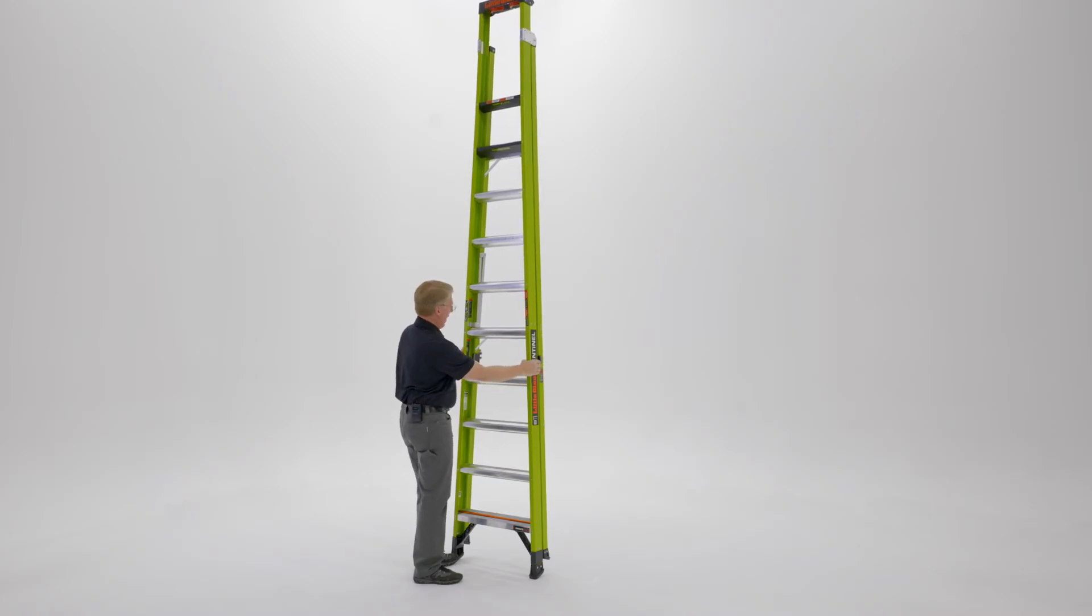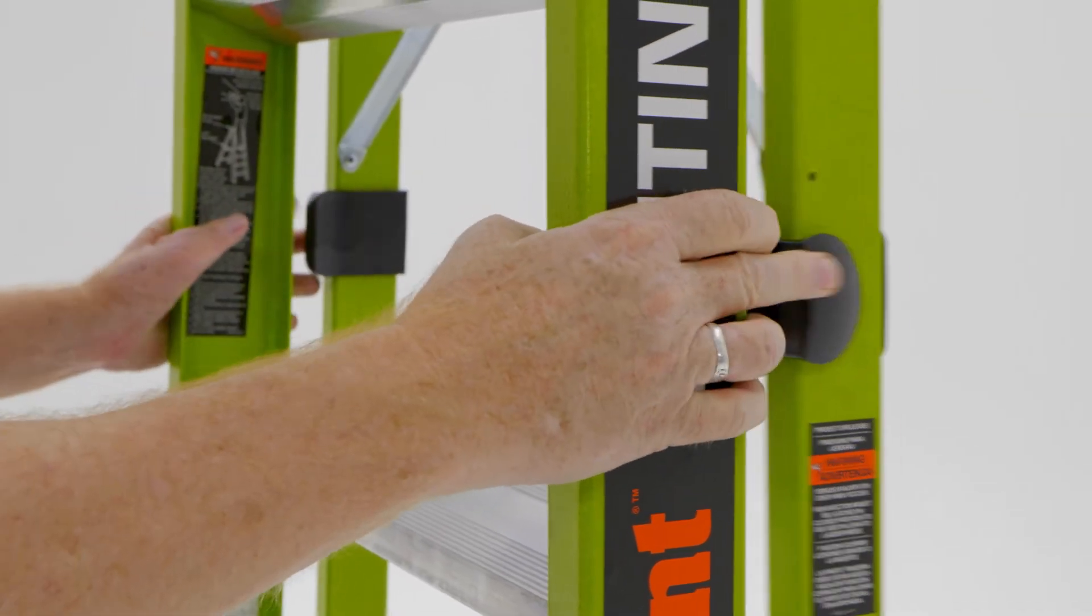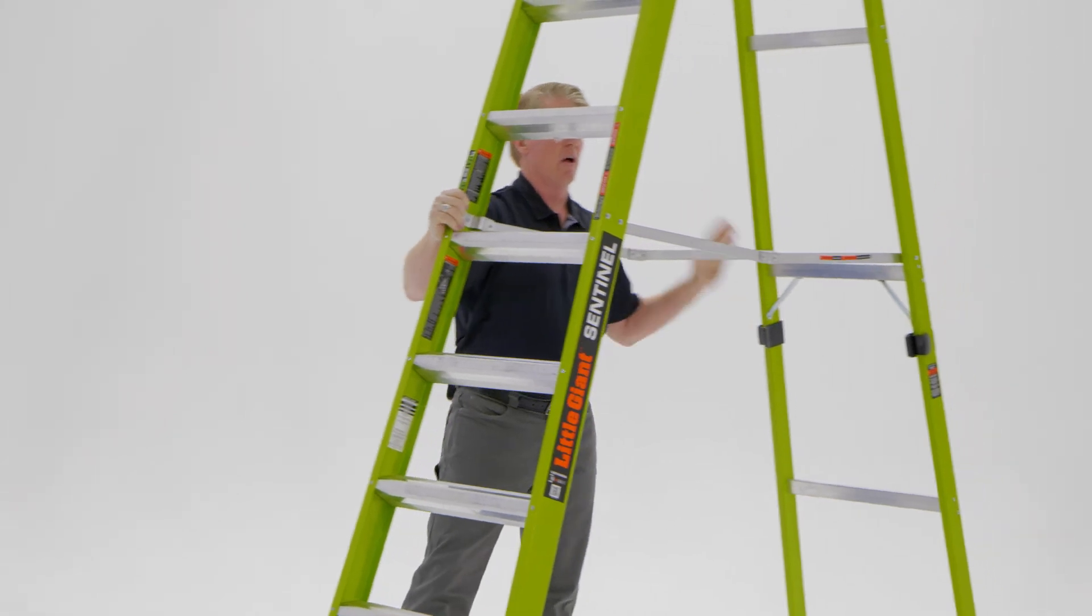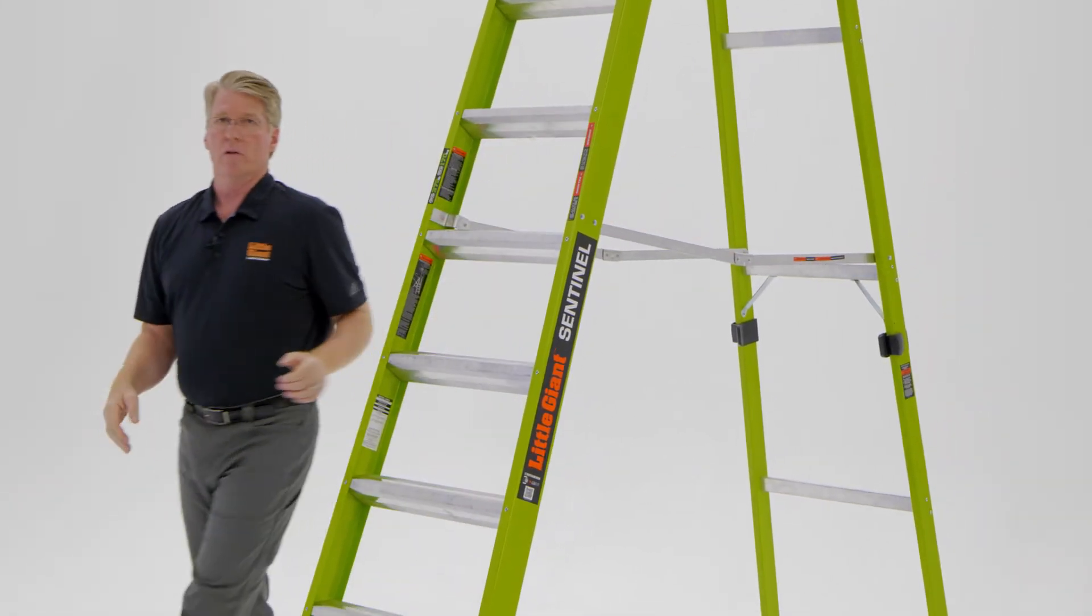To open this up, just grab those rail clips on either side, push them in, and pull the back side of your ladder out until your spreader bars lock open.